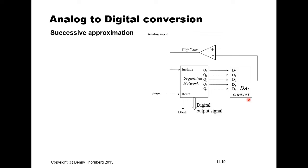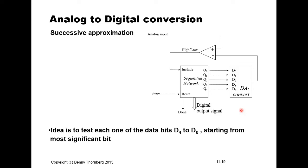The successive approximation method is the answer to our requirements. Looking at the principle sketch, it is more or less the same circuit except that the binary counter is now replaced with a more general digital sequential network, which also has a 'done' signal and a latched digital output. The sequential network is programmed to test each data bit starting from the most significant bit, checking whether it fits within the range of the analog input. If it fits, that bit is included in the output code.